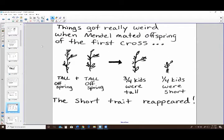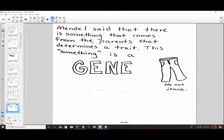So then he decided he was going to take those tall pea plants that he got from that cross and he was going to mate those together or cross them. And when he did that, most of the offspring were tall pea plants, which is what he was expecting. But there was also some short ones. What in the world was happening? So he was not expecting the short pea plants to reappear. So he said something has to be controlling if the pea plant is tall or short, and he called that something a gene.